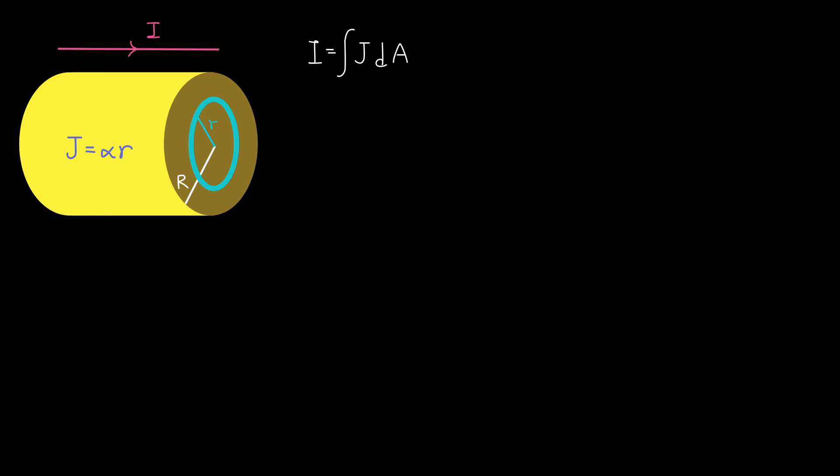Why are we taking an integral? If J had been constant, we would simply multiply J by the cross-sectional area to find the total current. Because J is not constant, we have to take an integral. Because J changes with the distance from the center, we have to integrate over the distance from the center, which is the variable r.